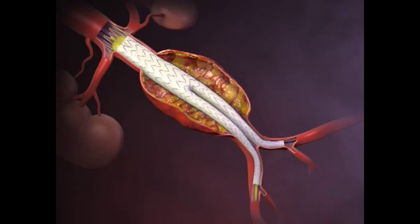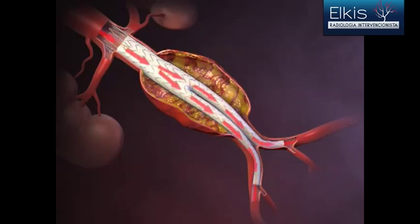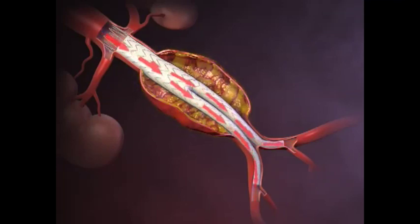Finally, the sheaths and guide wires are removed and the femoral artery is repaired. Aortic blood subsequently flows through the stent graft. Endovascular abdominal aortic aneurysm repair is intended to relieve further pressure on the aneurysm and reduce the risk of further dilatation or rupture.